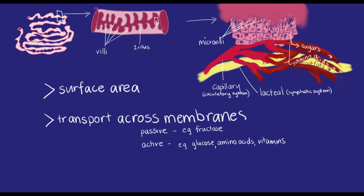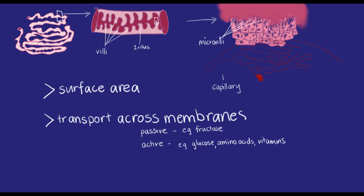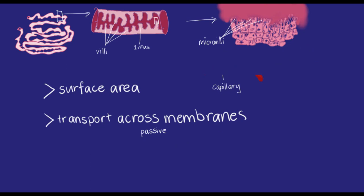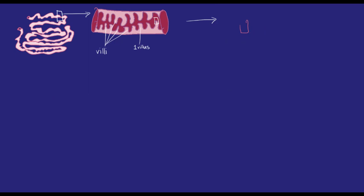Without the specialised microvilli surface of the epithelial cells in the small intestine, and without the shape of the small intestinal tissue as a tube with a ginormous surface area, the absorption of nutrients by the digestive system would be really inefficient.